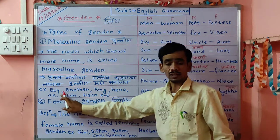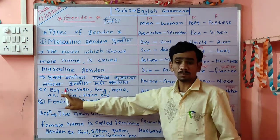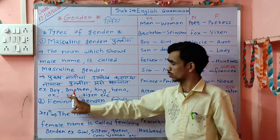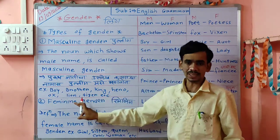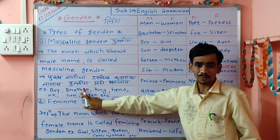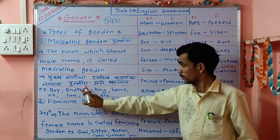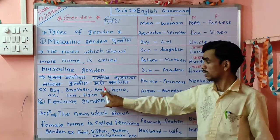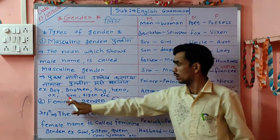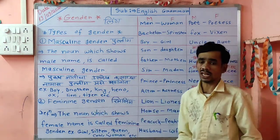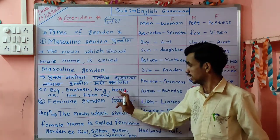For example, boy — boy is a masculine gender because it shows the qualities of a man. And what is the opposite of boy? Opposite gender, feminine gender — girl. Brother's opposite is sister. Brother is masculine, sister is feminine. King means Raja is also a masculine gender. Hero means Nayak is masculine. Then ox, lion, tiger, etc. — all these are masculine gender examples.